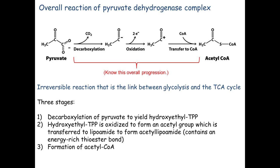This reaction is completely irreversible — it cannot go backwards. The main reason is the very first step: that loss of CO2. Decarboxylation is generally irreversible. If you lose CO2, you can think of it as not coming back — it's a gas, it's leaving, it's gone. So when a molecule decarboxylates, you can think of it as an irreversible reaction.